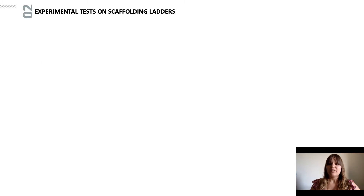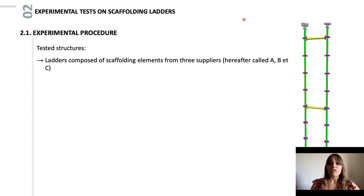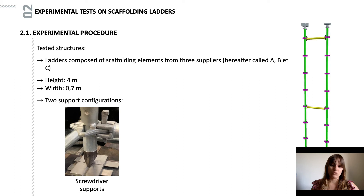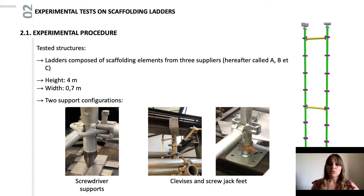In this second test campaign, the elements tested were scaffolding ladders consisting of four standards of 2 meters and three transomes of 0.7 meters. The material used came from three different European suppliers. The total height of the ladders is 4 meters, which is the height recommended by the European standards between two anchor points. Two configuration supports were used: the first was screwdriver supports to serve as pin-jointed supports, and the second was clevises and screw jack feet, which correspond to the actual supports of the scaffolding structure.